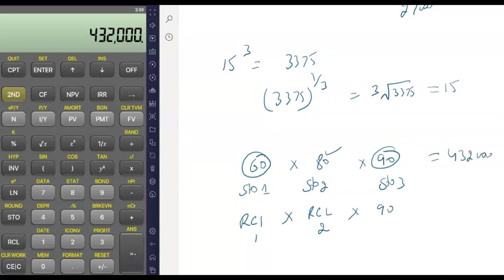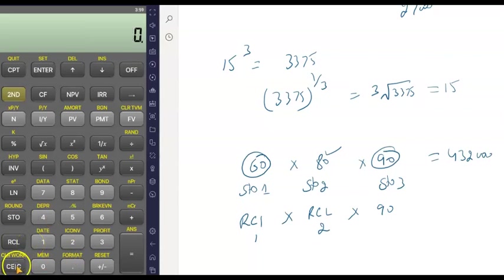To recall stored values: press RCL 1 — 60 appears. Multiply, then press RCL 2 — 80 appears. Press equals, then multiply and press RCL 3 — 90 appears. Equals gives 432,000. You can store up to nine values. Press RCL 4 and 432,000 will appear if stored there. That's how you use the STORE and RECALL buttons.